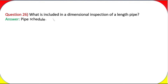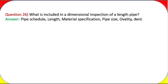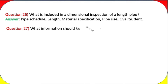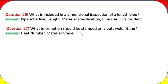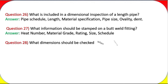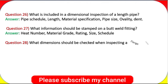Question 26: What is included in a dimensional inspection of a length of pipe? Answer: Pipe schedule, length, material specification, pipe size, ovality, and dent. Question 27: What information should be stamped on a butt weld fitting? Answer: Heat number, material grade, rating, size, and schedule.